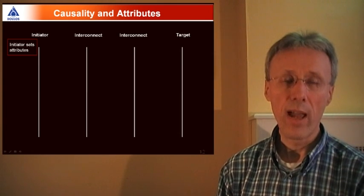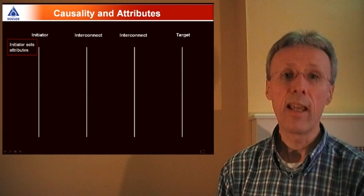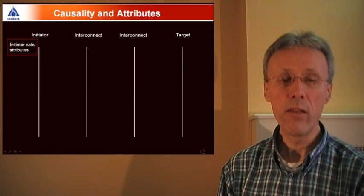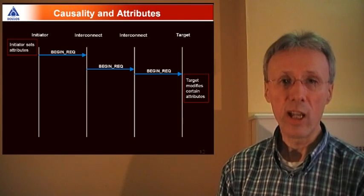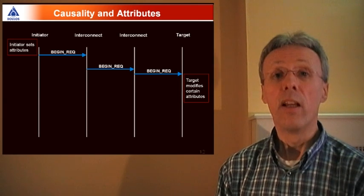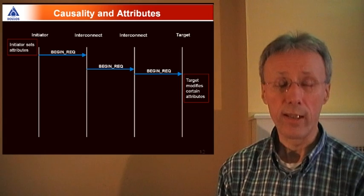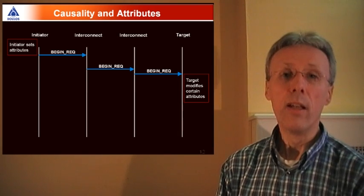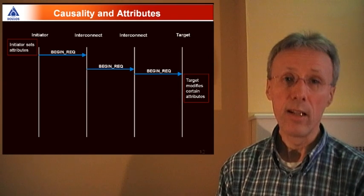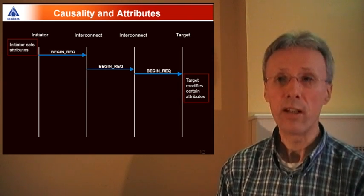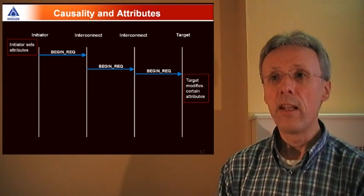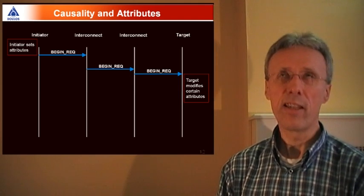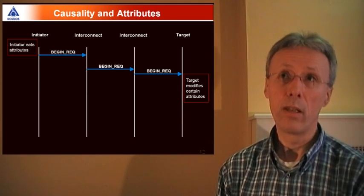There's a thorough set of checks to make sure that the attributes of the generic payload are set and modified correctly. There are checks that the initiator has correctly set all of the attributes to the right default values. The transaction then gets propagated from the initiator through one or more interconnect components to the target, and the protocol checker checks the proper causal sequence there. If you instantiate multiple checkers along a path from initiator to target, those protocol checkers actually work together behind the scenes to check that the transaction has been properly propagated from initiator through to target. The checkers check that the interconnect only modifies the attributes that it's allowed to modify, which isn't very many actually. It can only modify the address attributes, the extensions, and that's pretty much it.